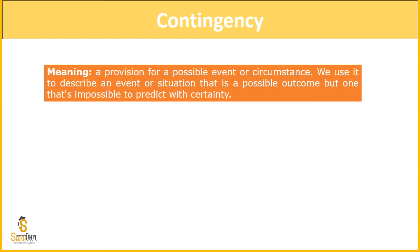We use contingency to describe an event or situation that is a possible outcome, but one that is impossible to predict with certainty. This means that if we are in an X, Y, Z business, we can have two possible events — either we can profit or face a loss. Both outcomes are uncertain; we cannot be 100% sure which will happen. So now we have to create a mindset for that.